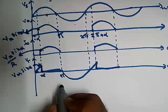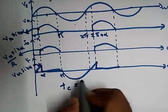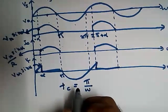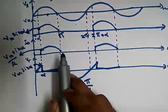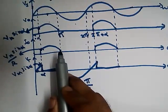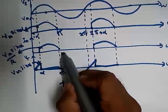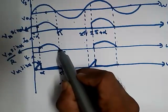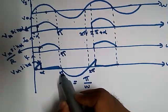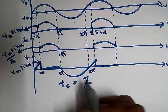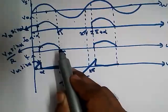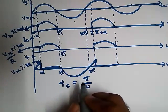Now we have to define some terms. The first term is turn-off time Tc, where Tc equal to pi by omega. Tc is the circuit turn-off time, defined as the time up to which the SCR is subjected to reverse voltage after the current through the thyristor becomes 0. At point pi, the current through the thyristor becomes 0. After this point, from pi to 2pi, reverse voltage is applied. So the net reverse voltage is applied for a duration of 2pi minus pi, which gives pi divided by omega. Therefore, the turn-off time is Tc equal to pi by omega.